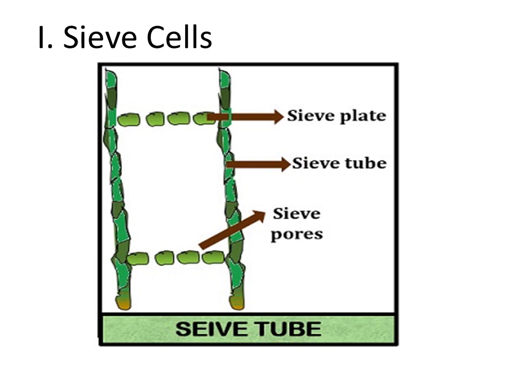At the end of each sieve cell, sieve plates are present which have many sieve pores scattered on the surface of the sieve cells.